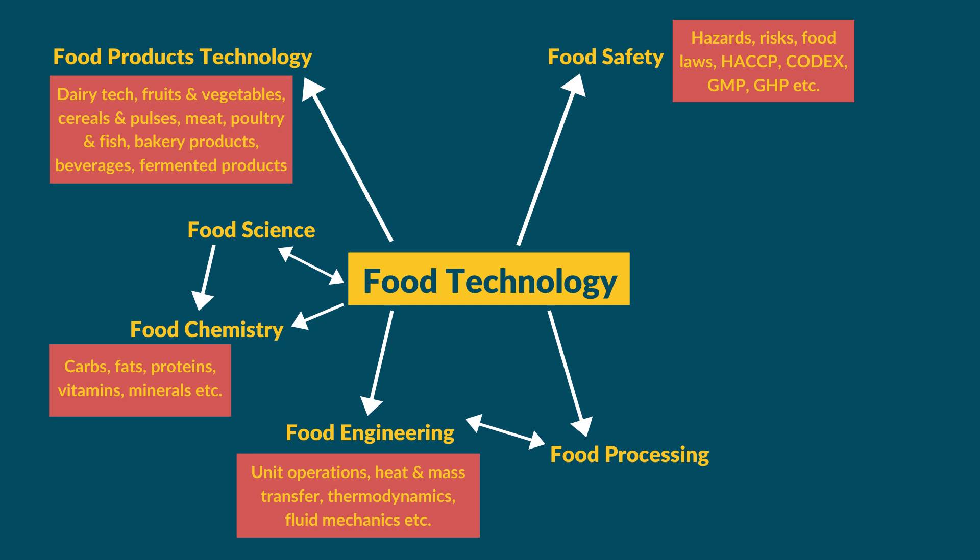You are also going to study HACCP — one of the most important concepts under food safety — as well as the Codex Alimentarius Commission, and other important concepts depending on your college curriculum, such as Good Manufacturing Practices (GMP) and Good Hygiene Practices (GHP).